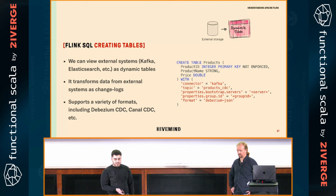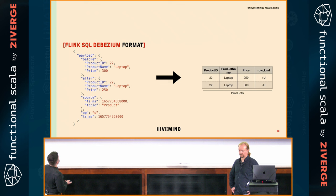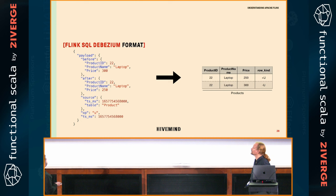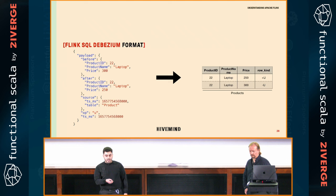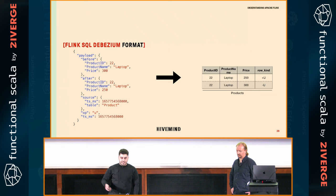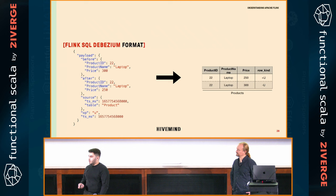Because I'm using the Debezium format, the table that is created has a minus-U (update-before) and a plus-U (update-after) — so that's how it was and how it is now. Flink has built-in support for Debezium — it can create tables out of Debezium data, which is really cool.